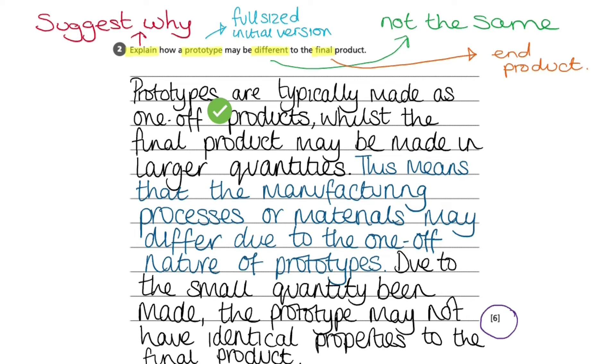Whilst the final product may be made in larger quantities, that is the second mark. This means that the manufacturing process or materials may differ due to the one-off nature of prototypes, that would be mark three and mark four.